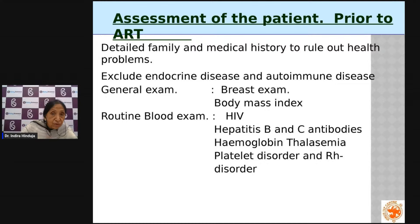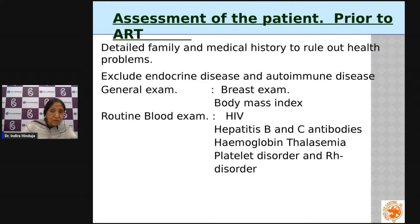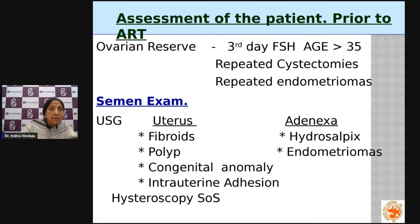Once the patient is selected, we assess whether she is fit for the entire procedure. A thorough history is taken and examination performed, including assessment of obesity and any infections. Blood tests confirm good hemoglobin and exclude disorders like thalassemia. Hormones are studied to confirm the ovaries are functioning and that she has an adequate ovarian reserve. A proper semen examination is also done to confirm the male factor is normal.